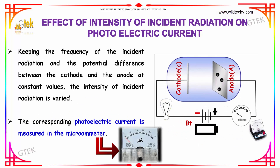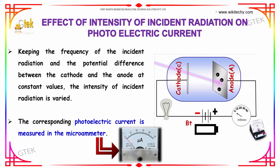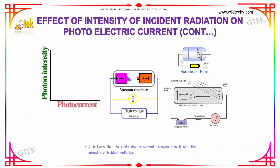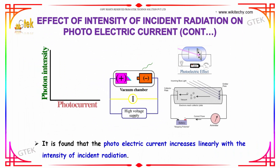Keeping the frequency of the incident radiation and the potential difference between the cathode and the anode at constant value, the intensity of the radiation is varied. The corresponding photoelectric current is measured in a microammeter. It is found that the photoelectric current increases linearly with the intensity of the incident radiation.